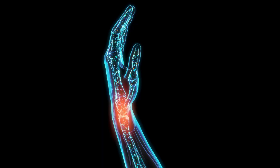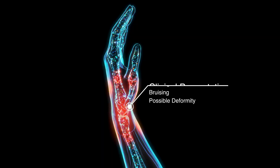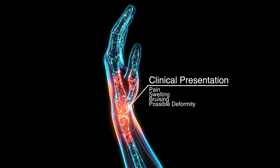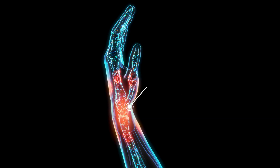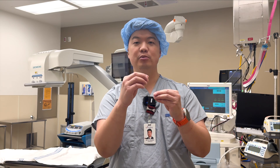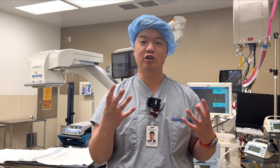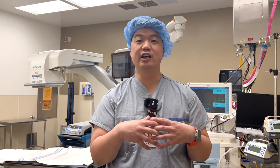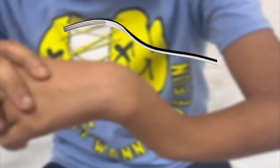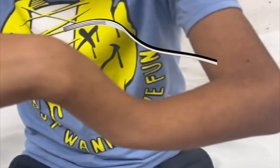When this happens, people generally have a very sore, swollen wrist. If it's severe and what we call displaced — meaning the bones have moved out of position — you can have what's called the classic dinner fork deformity.